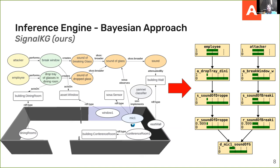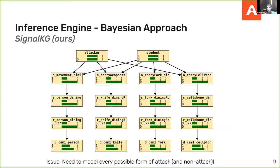This is great in theory for simple scenarios, but there's a practical issue: it requires a human to model every possible form of attack and non-attack. In a more complex example, modeling whether it's an attacker versus a student eating requires taking into account whether a person has been detected, whether there's a knife, a fork, and whether they're carrying a cell phone.